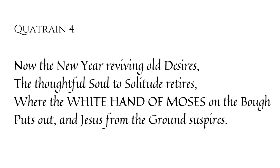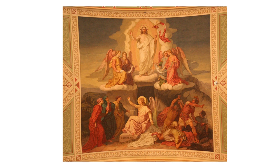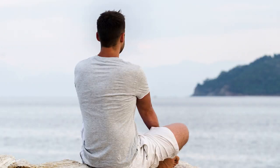Now the new year reviving all desires, the thoughtful soul to solitude retires, where the white hand of Moses on the bow puts out, and Jesus from the ground suspires. The fourth quatrain has allusions. The white hand of Moses likely refers to the miracle that Moses demonstrated before the children of Israel, in which he placed his hand inside his clothing by his breast, and taking it out, it became white as snow because of the disease leprosy. Putting it back inside and taking it out again, it reverted to its healthy state. 'Jesus from the ground suspires' may refer to Jesus' resurrection or to his ability, through his breath, to produce life. The idea is that the new year makes a person think and meditate, and by meditating alone, one comes up with thoughts so wonderful they are like miracles coming from inside.